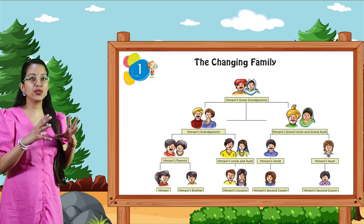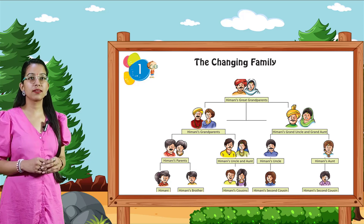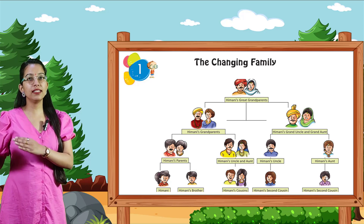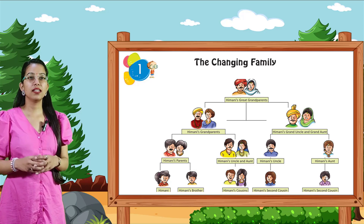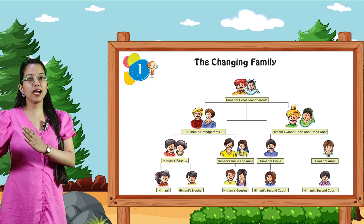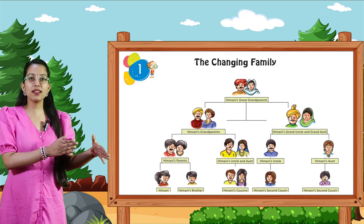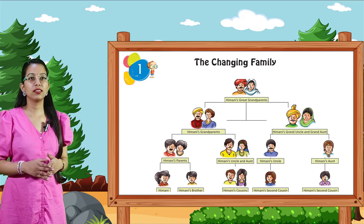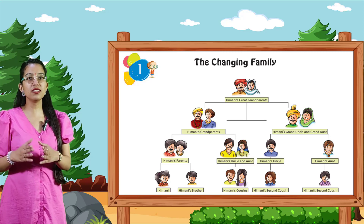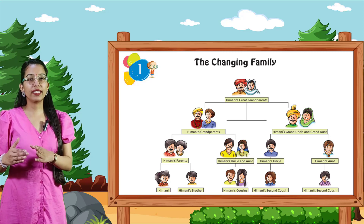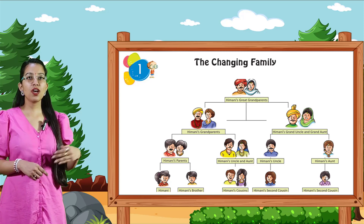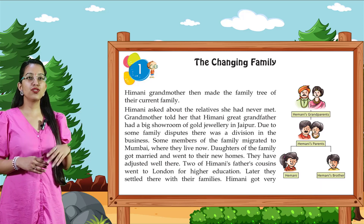The family tree shows: Himani's great-grandparents, Himani's grandparents, Himani's uncles and aunts, Himani's uncle, Himani's aunt, Himani's brother, Himani's cousin, Himani's second cousins. Now let us move further in the chapter.